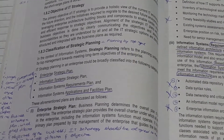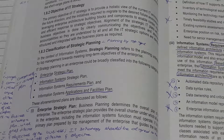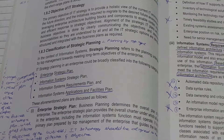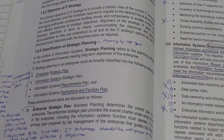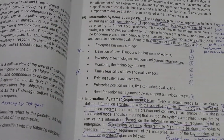Enterprise Strategic Plan refers to what is the strategy of the enterprise and what is its direction — where does the enterprise want to go and what are its ultimate targets. That is what is given in the Enterprise Strategic Plan.